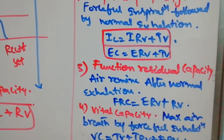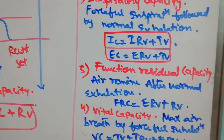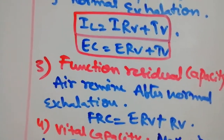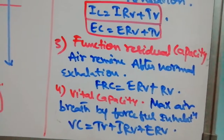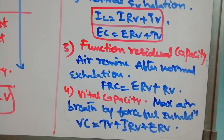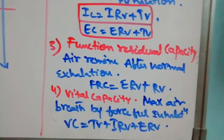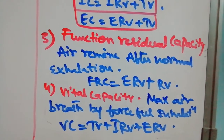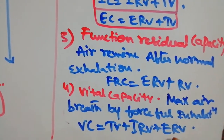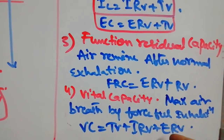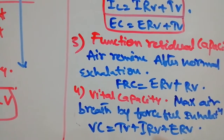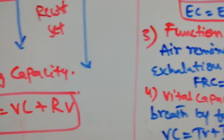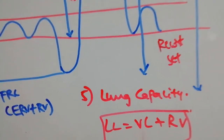FRC equals ERV plus RV — this is the air remaining after normal exhalation, which is the functional residual capacity. Vital Capacity is the maximum air breathed by forceful inhalation plus forceful exhalation — that is IRV plus ERV plus TV. So vital capacity covers maximum air in all directions except the residual volume.